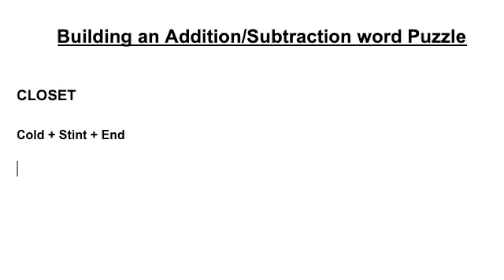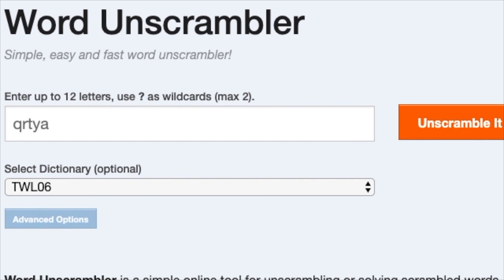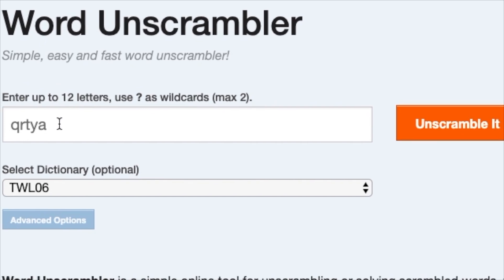Once you have those, you want to figure out all of the extra letters. So you're going to remove C, L, O, S, E, T from cold, stint, and end. And it gets you D, I, N, T, N, D. Next, you're going to head to any type of word unscrambler. You're going to add in all the extra letters and see what you have.